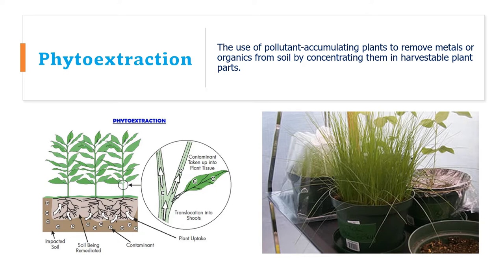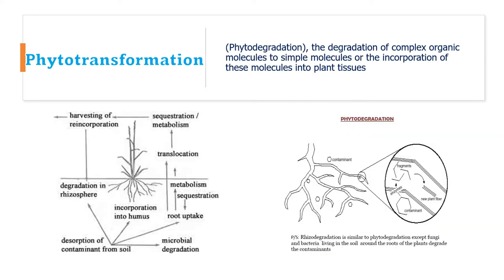Phytotransformation, also called phytodegradation, is the degradation of complex organic molecules to simpler molecules, or their incorporation into plant tissue. Plants transform harmful organic or metallic compounds into less toxic substances by changing their oxidation states or compound structure. This process occurs in association with microorganisms present in the rhizosphere, which release substances that convert pollutants into compounds harmless to plants, animals, and the existing food chain.